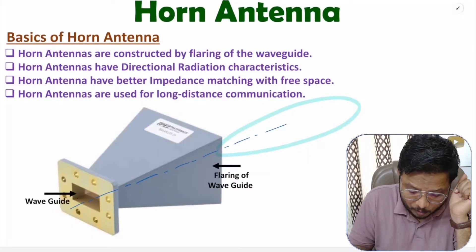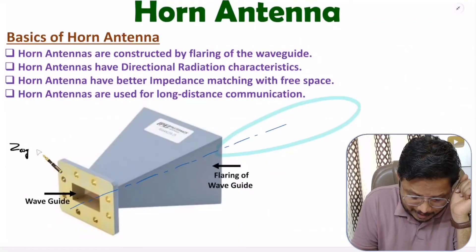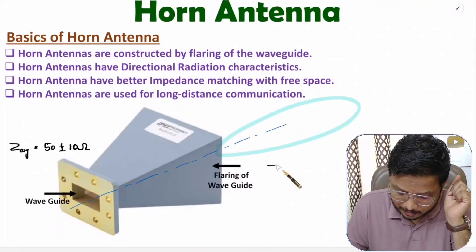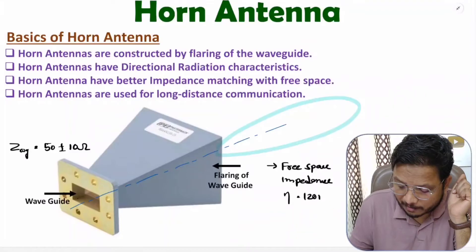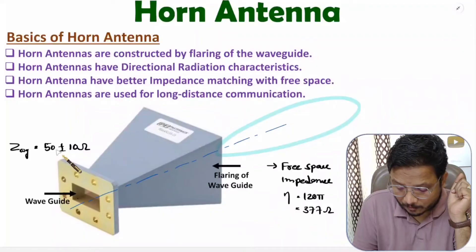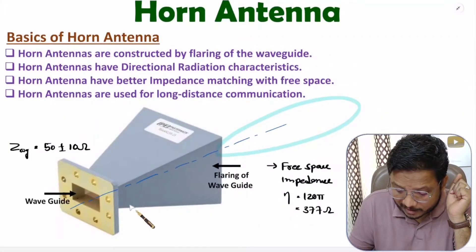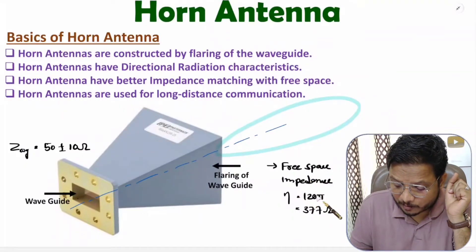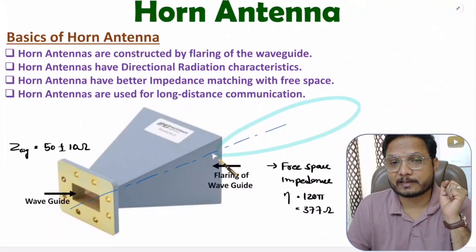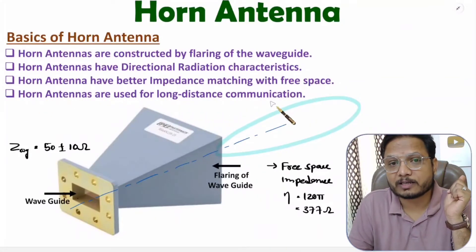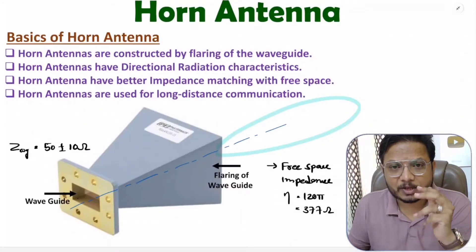The waveguide has impedance of around 50 ±10 ohm, while free space impedance eta is 377 ohm. So there is a mismatch between waveguide and free space. By providing flaring we can increase the impedance of the horn antenna to match free space impedance, resulting in directional radiation characteristics. Because of these directional radiation characteristics, horn antennas are used for long distance communication.